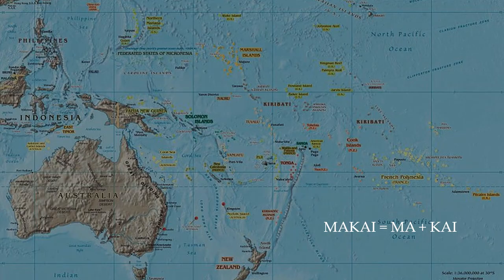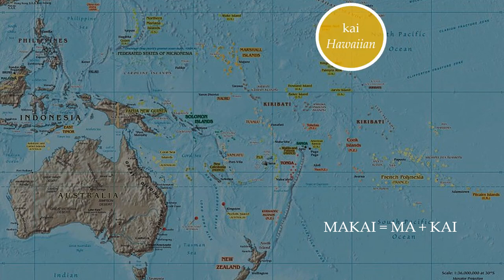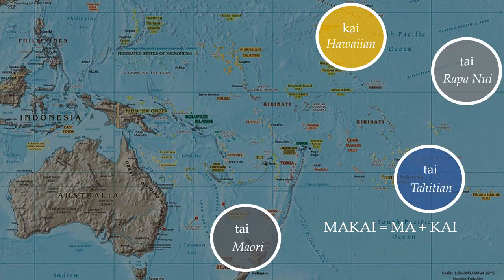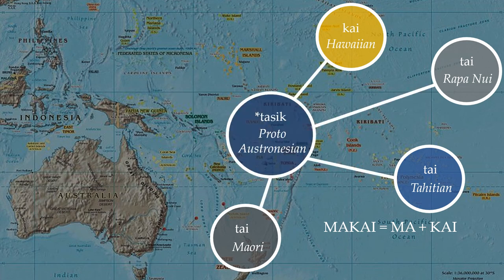Let's take a look at the other word, kai — the word for the sea or ocean in Hawaiian. It is related to the words beginning with tai in other languages: in Rapa Nui, in Tahitian, in Maori, and even in Samoan and Tongan, they say tai. In some languages, tasi, meaning the sea. They all come from the Proto-Austronesian tasik, which means the sea or the ocean.